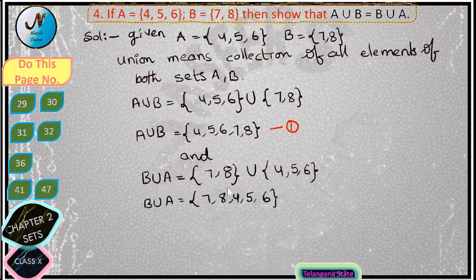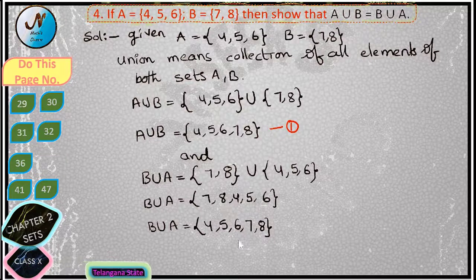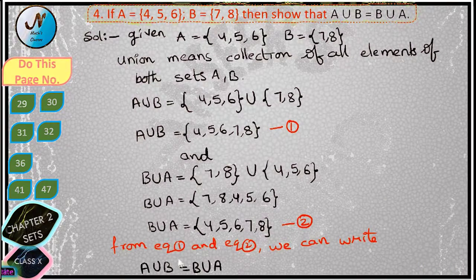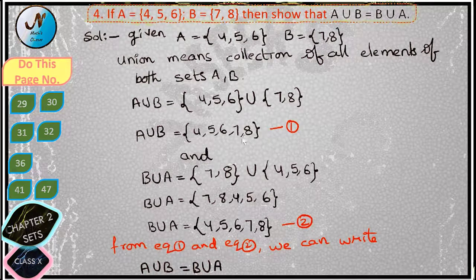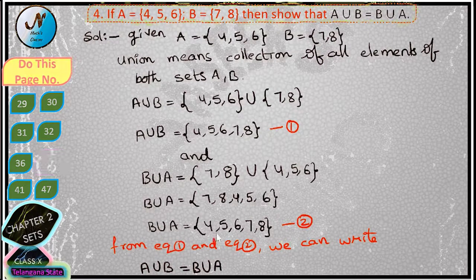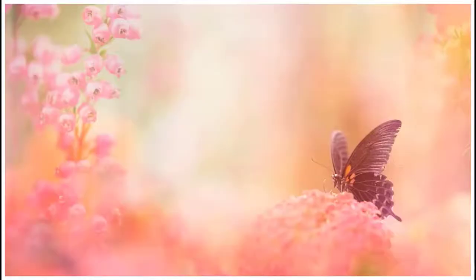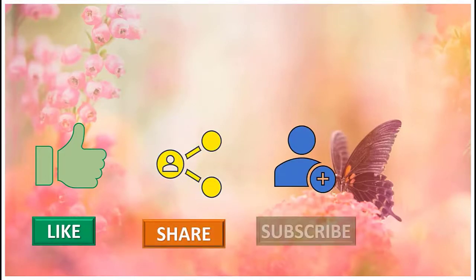Next we find B union A, which is equal to {7, 8} union {4, 5, 6}. Together we can write B union A is equal to {7, 8, 4, 5, 6}. Since set order does not matter, we write B union A is equal to {4, 5, 6, 7, 8}. Let this be equation two. From equations one and two, we can write A union B is equal to B union A, because both have elements {4, 5, 6, 7, 8}. Please like, share, and subscribe to our channel for latest updates by pressing the bell icon.